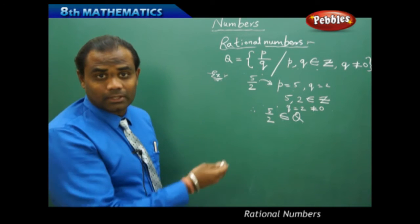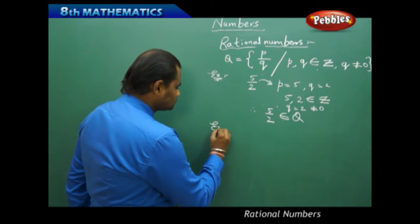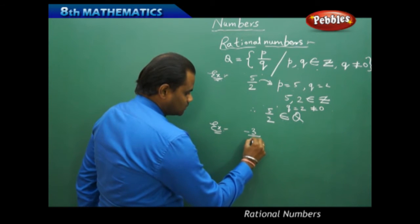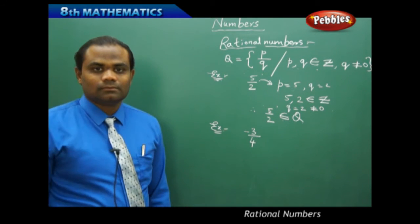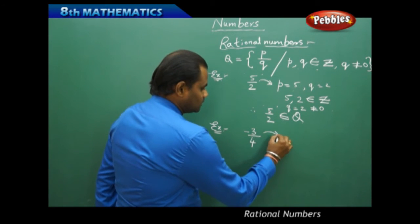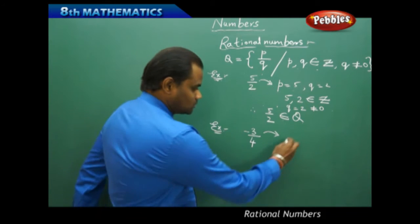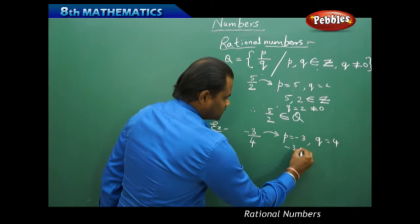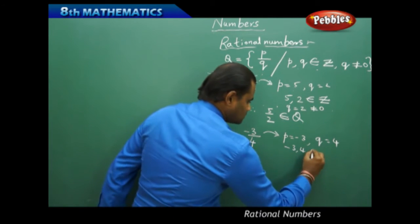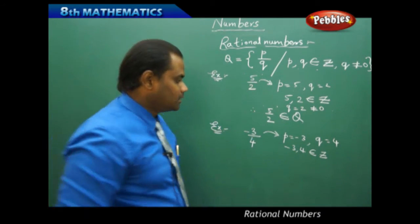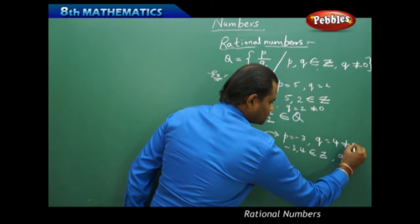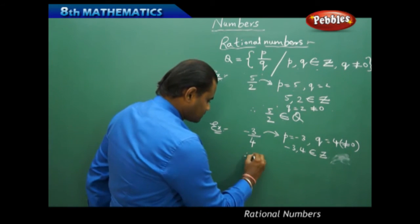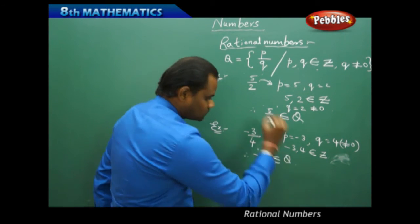Let's take another example: −3/4. Comparing with P by Q form, P is −3 and Q is 4, where −3 and 4 both belong to Z, because even negative numbers are integers. And Q equals 4 is not equal to 0. Both conditions are satisfied, therefore −3/4 belongs to Q.